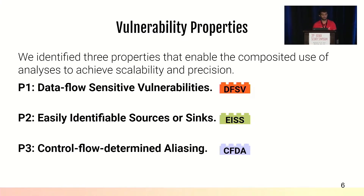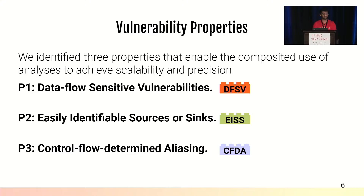These three properties are: P1, dataflow-sensitive vulnerabilities, where the vulnerability depends upon some data being processed. P2 is easily identifiable sources or sinks — since applications have many dataflows, the analysis must focus on the dataflow of interest specified by identifiable endpoints such as a source and a sink. P3 is control flow-determined aliasing. In static analysis, pointer aliasing is a common problem leading to incorrect results, but in most cases the pointer aliasing problem can be solved purely by control flow analysis.